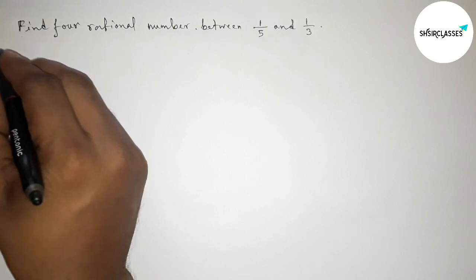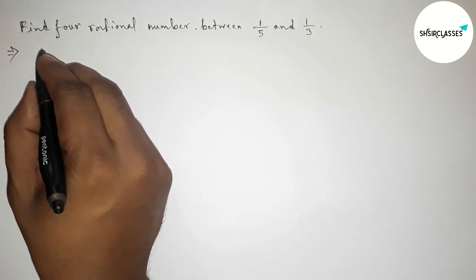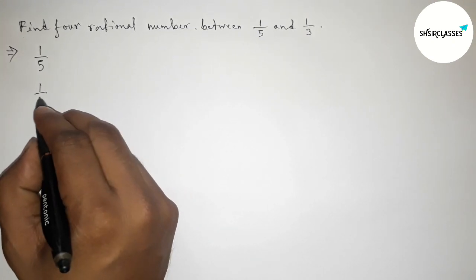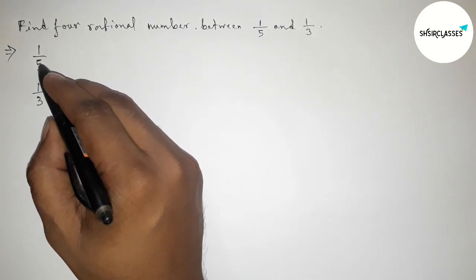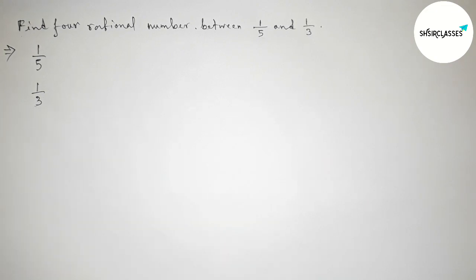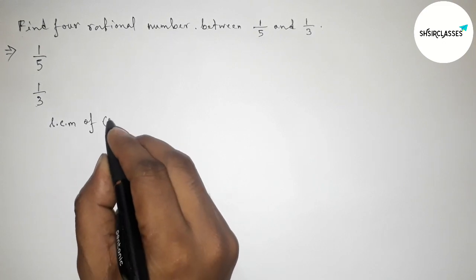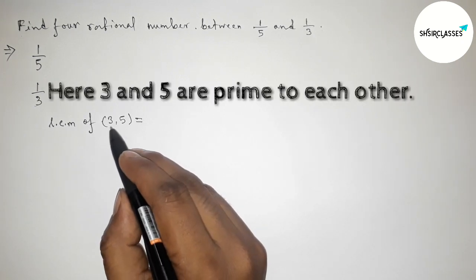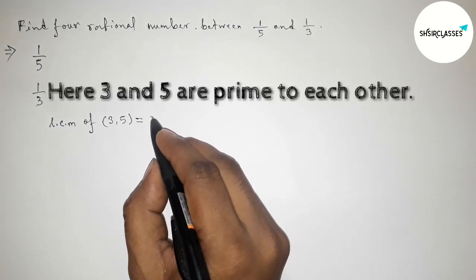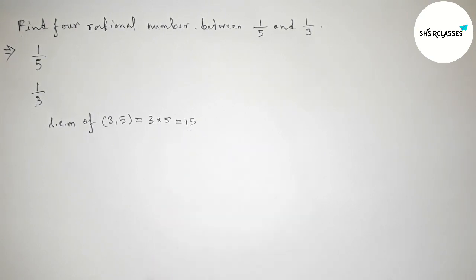First of all, let us solve this problem. Here the given two rational numbers are 1 by 5 and 1 by 3. The denominators of both numbers are not equal, so we have to make equal denominators. First, finding the LCM of 3 and 5 — since 3 and 5 are prime to each other, the LCM will be the product of the two numbers, so 3 into 5, that is 15.